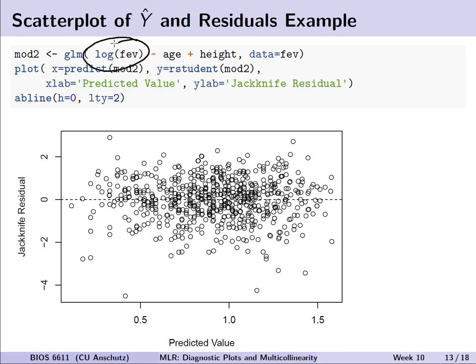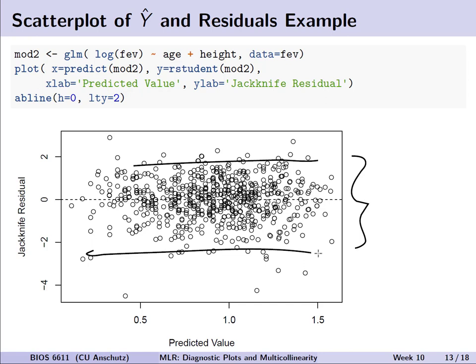As discussed in the context of simple linear regression, we can apply transformations to predictors and/or the outcome to address potential violations. For example, we may choose to log-transform FEV, fitting the model on the natural log scale for FEV with predictors age and height. In fact, this does appear to address the issues — the data is nicely distributed around the horizontal line at zero for the jackknife residual, with no fan-shaped pattern. There may still be a few potential outlier points to investigate.